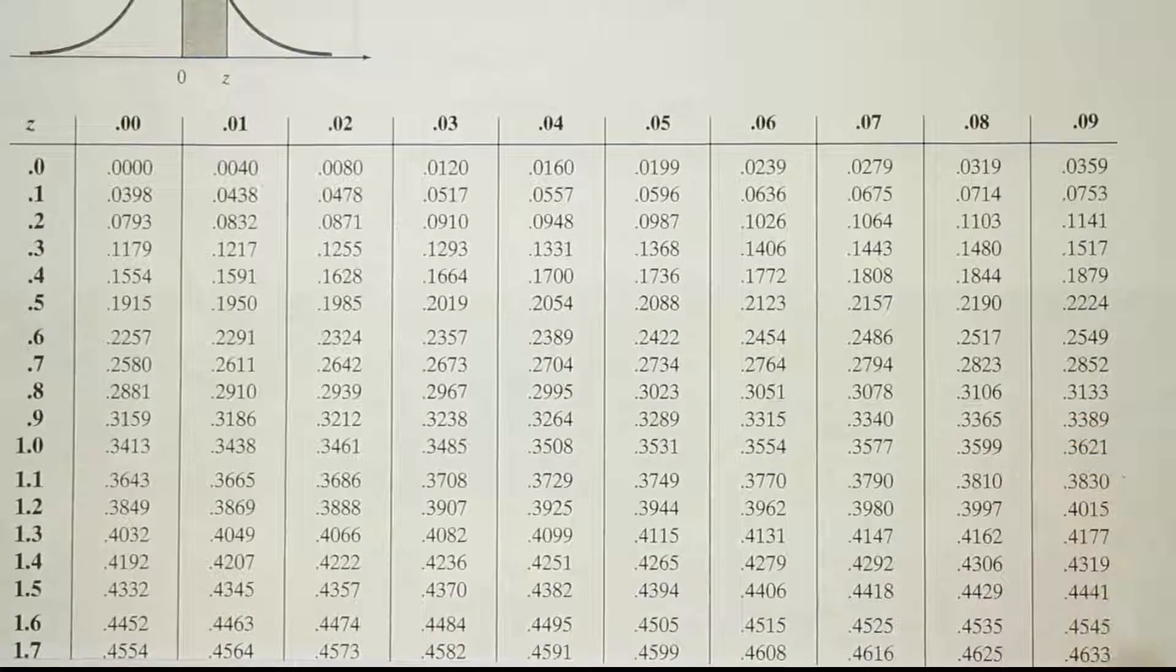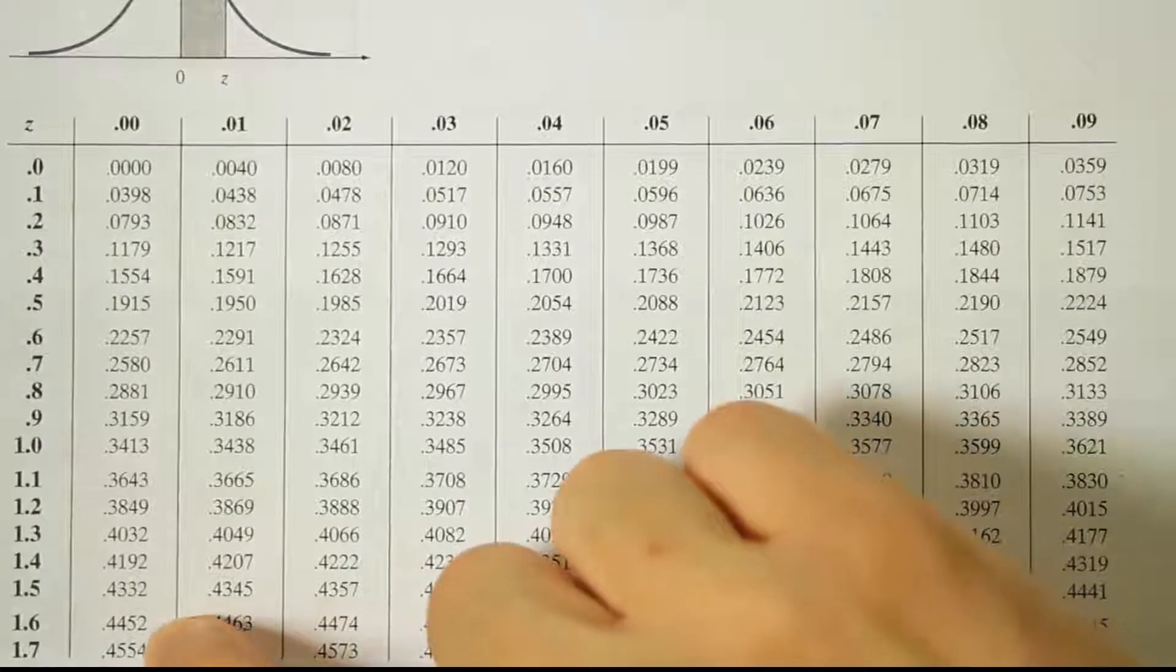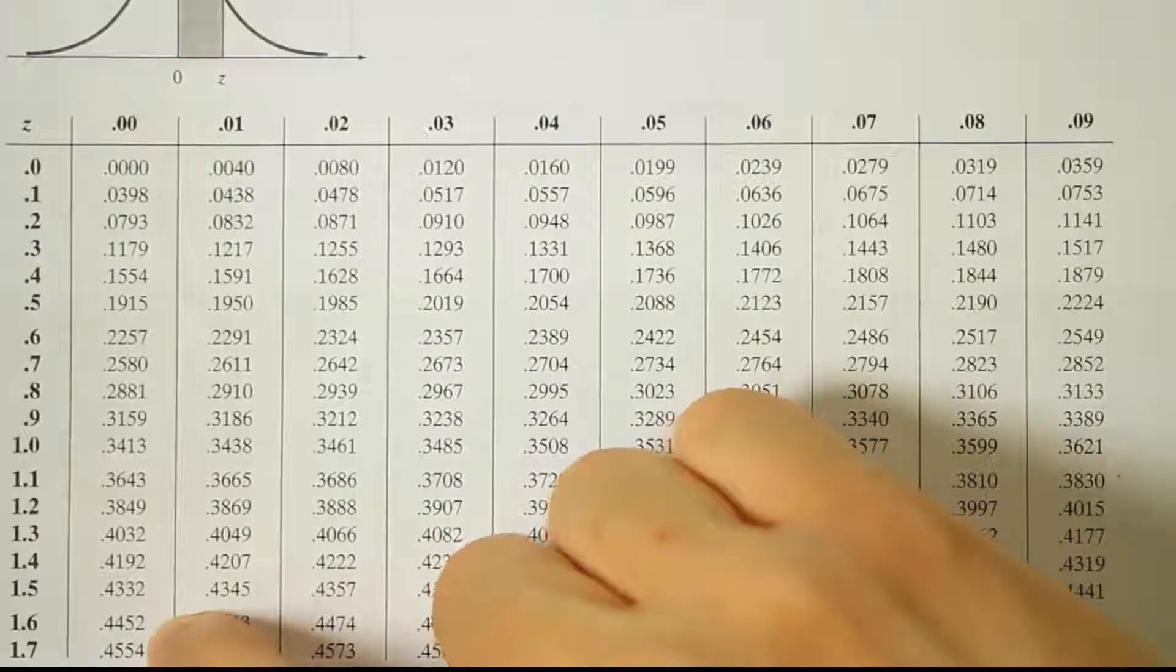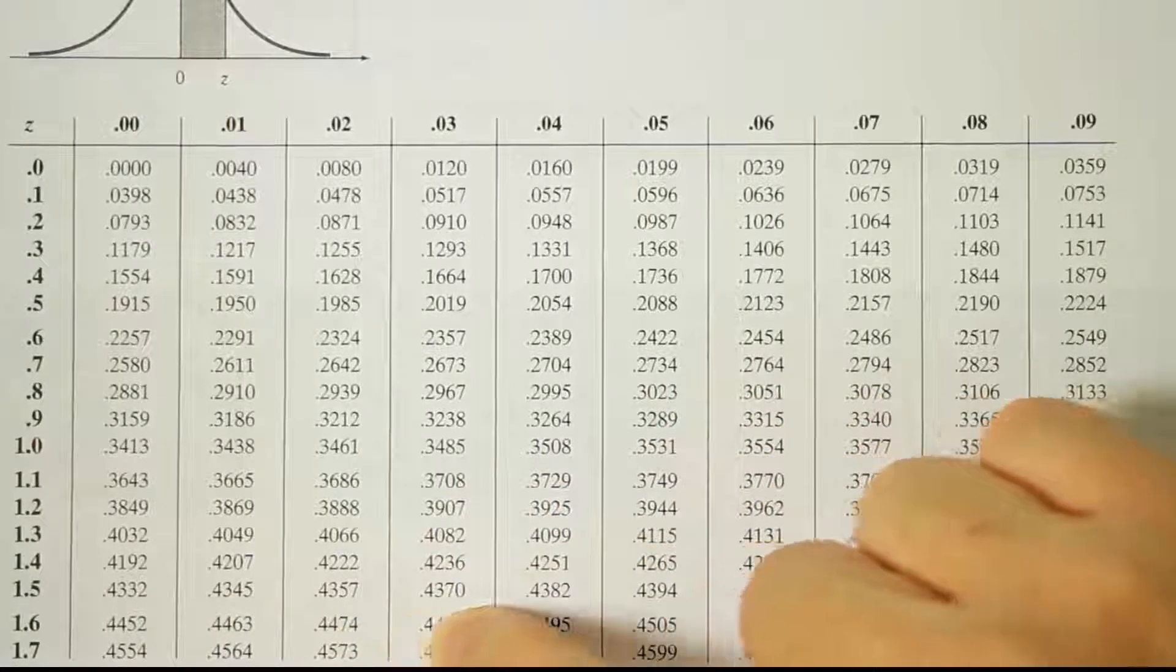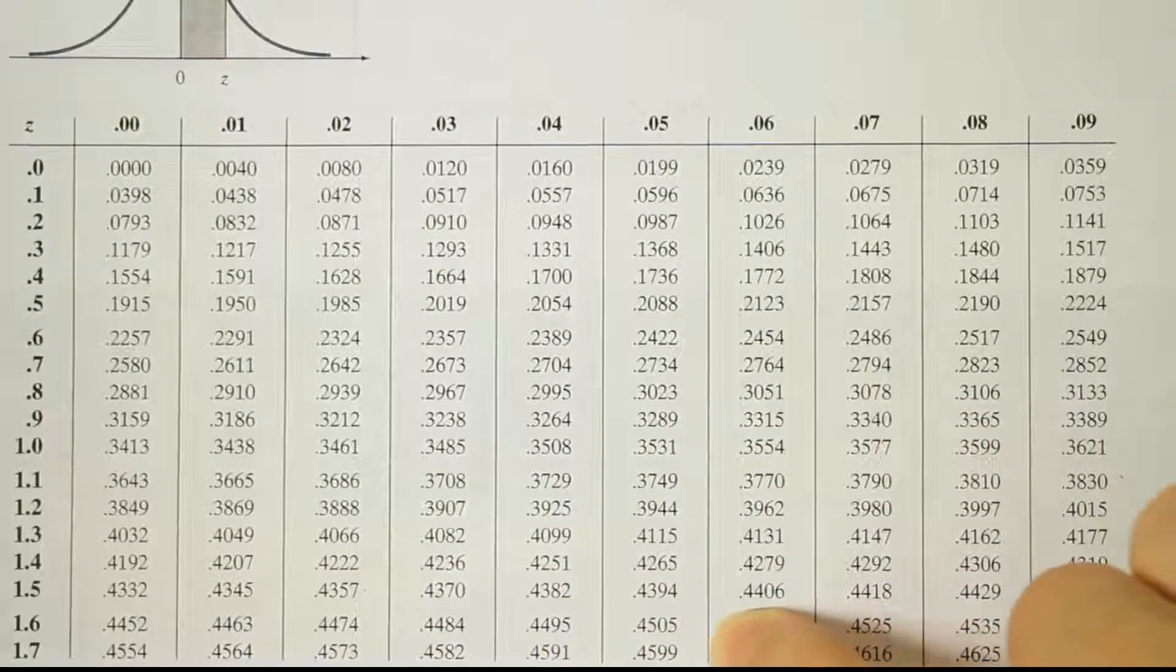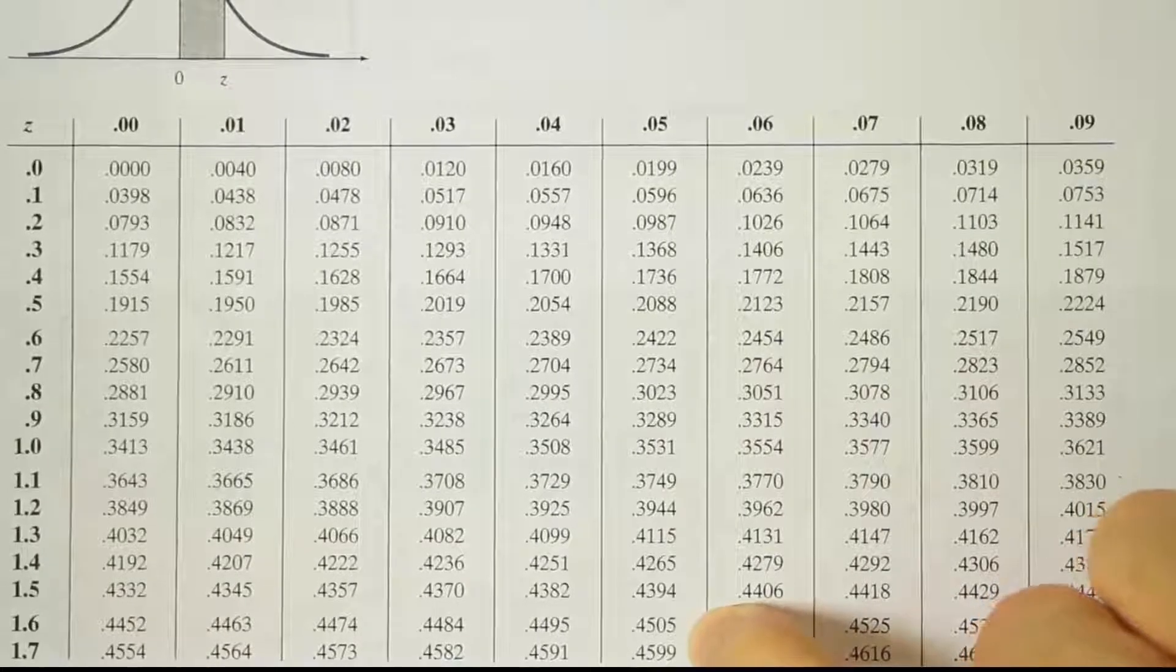Okay, so I have this row 1.7 and it's got 0.4554 in it. Let's go across to see if we see something close to 0.4600. Well, that's real close, right? That's just one ten-thousandth away.